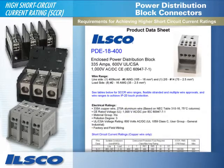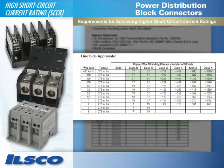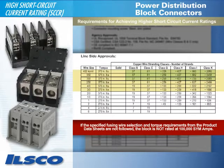The product data sheet also contains a line-side wire approval chart, which provides additional criteria necessary for a 100,000 amp short-circuit current rating. Under each class of copper wire stranding, the number of strands approved for those wires is indicated based on the wire size used. In this example, the line-side conductor range was 400 to 3-0, so the approved wire stranding is indicated by the highlighted boxes in the chart. The line-side approval chart also indicates the necessary torque to apply in inch-pounds for each wire stranding class. If the specified fusing, wire selection, and torque requirements from the product data sheets are not followed, the block is not rated at 100,000 SIM amps — it is rated at 10,000 SIM amps.